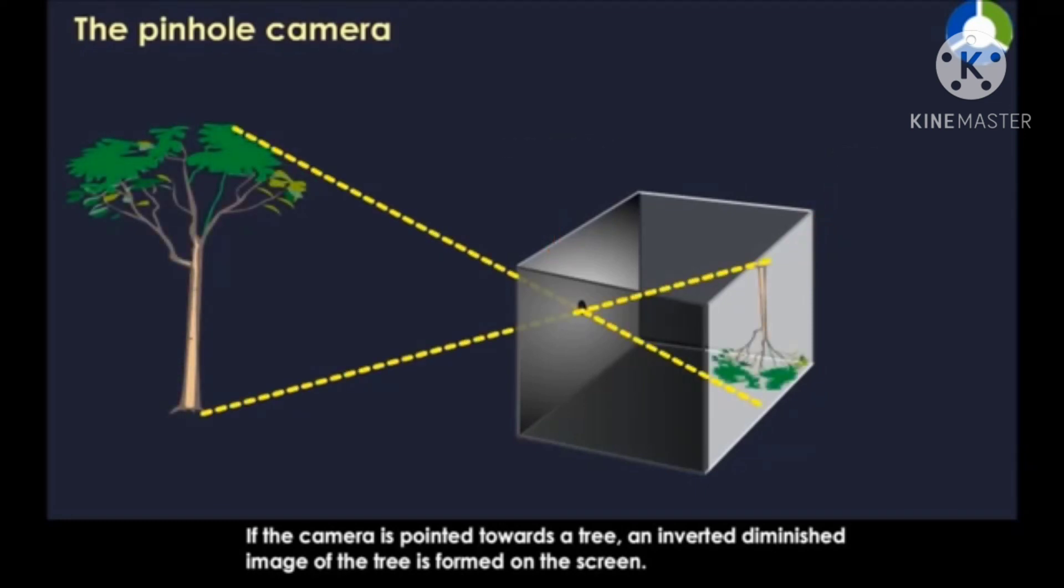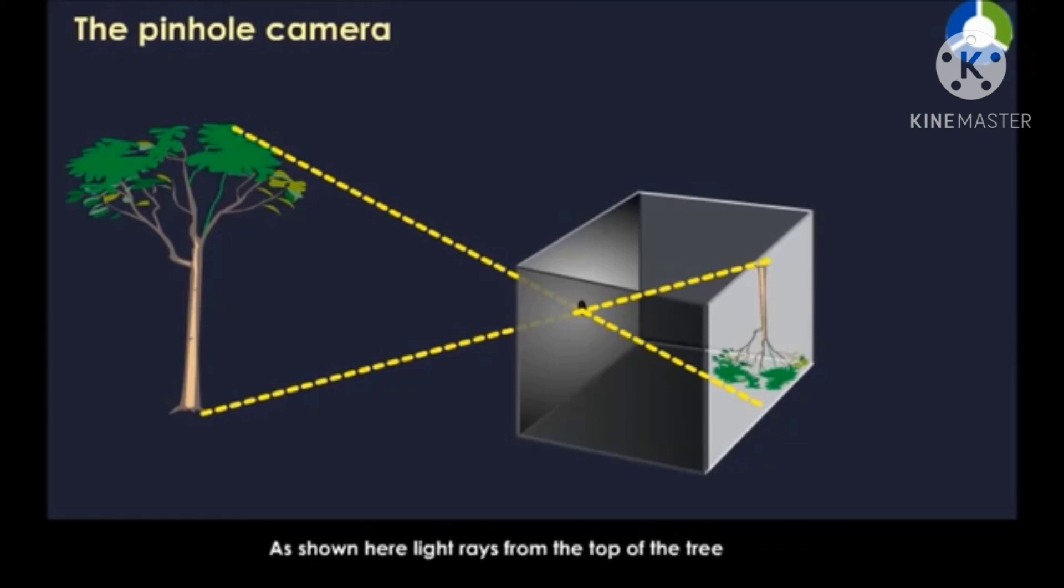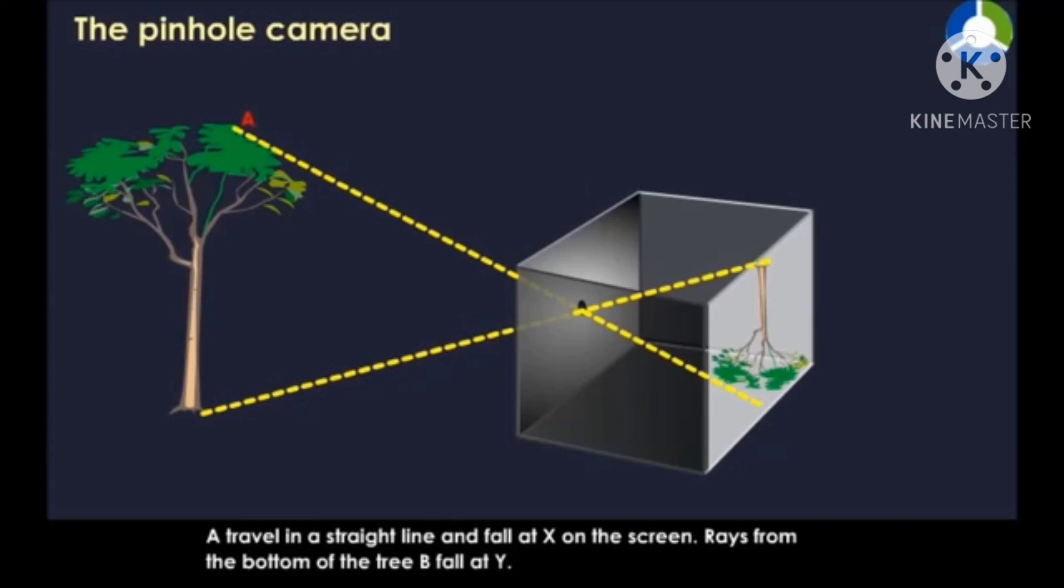As shown here, light rays from the top of the tree, A, travel in a straight line and fall at X on the screen. Rays from the bottom of the tree, B, fall at Y.